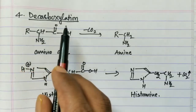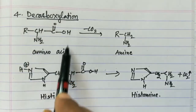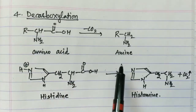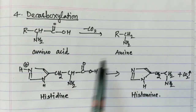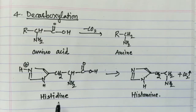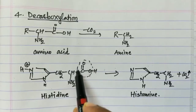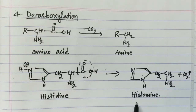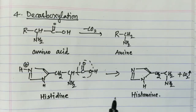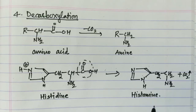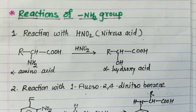The next reaction is the decarboxylation reaction. Amino acids on decarboxylation form the corresponding amines. For example, histidine undergoes decarboxylation — simple removal of the CO2 molecule — to give the corresponding amine histamine. This reaction also occurs in the stomach: histidine is decarboxylated to histamine, which secretes gastric juices in the stomach.